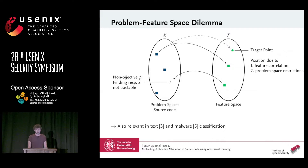The feature map is not bijective — if we have a feature point, it is not possible in general to find a valid source code with exactly those features. This dilemma is also relevant in other discrete domains, and I think it has not received as much attention as it should.